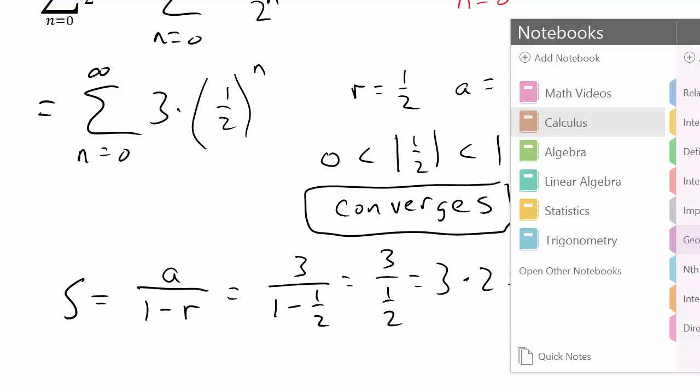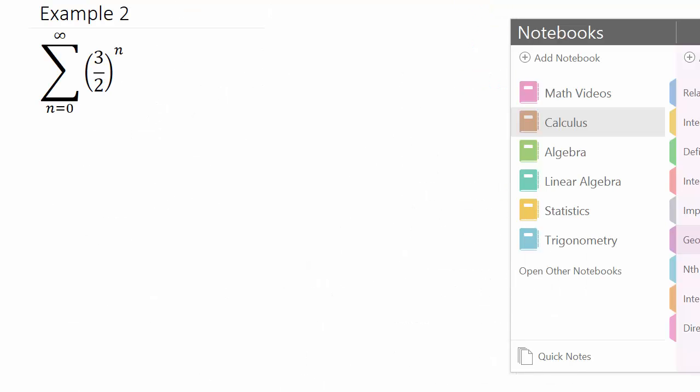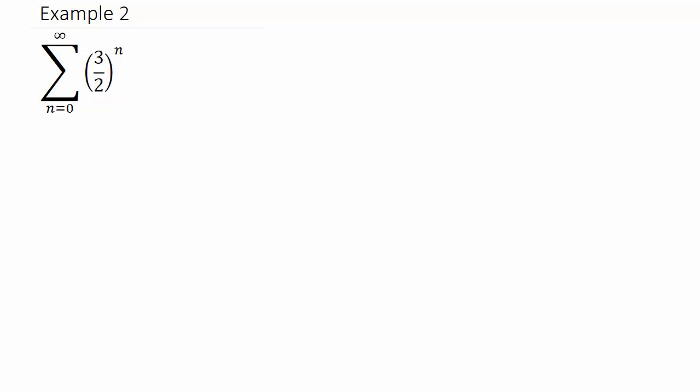Let's take a look at one more. All right, so this one is already in the form we need it in. Summation N equals zero to infinity, A times R to the n power. In this case, A would be one. R is what? Three halves. See, it's R raised to the n. So I have R equals three halves.